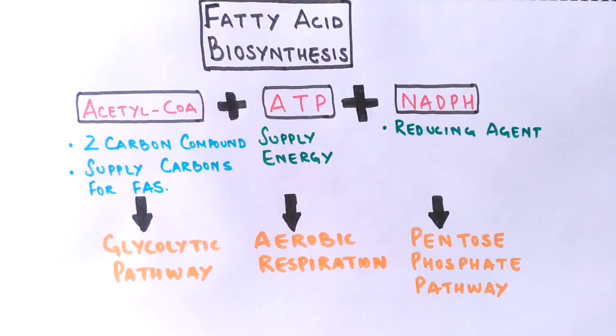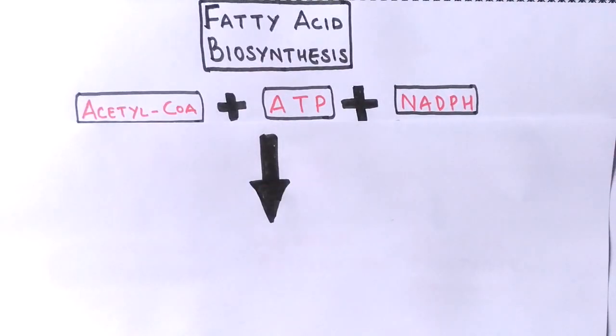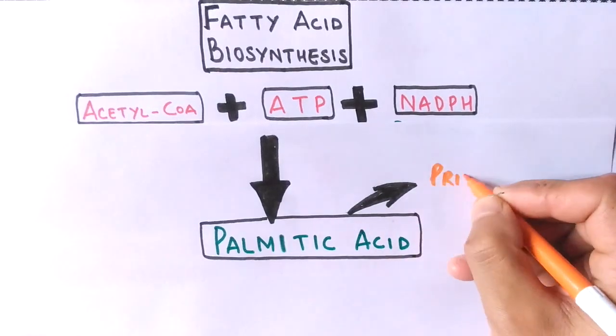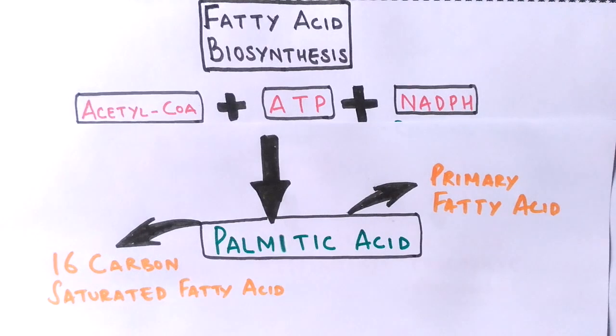So when these three kinds of molecules are present in the cytosol, fatty acid synthesis occurs and we get fatty acids in the form of palmitic acid, which is the primary fatty acid. This palmitic acid is a 16-carbon saturated fatty acid. Now let's see in detail how the fatty acid synthesis occurs.